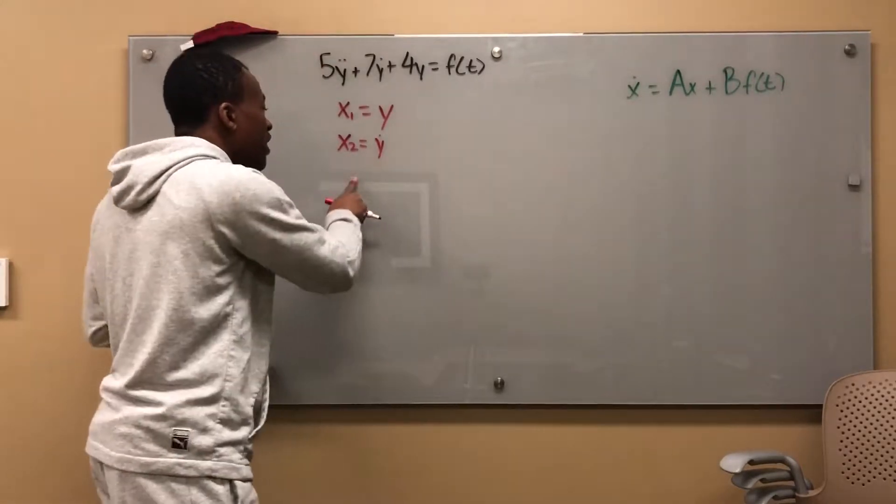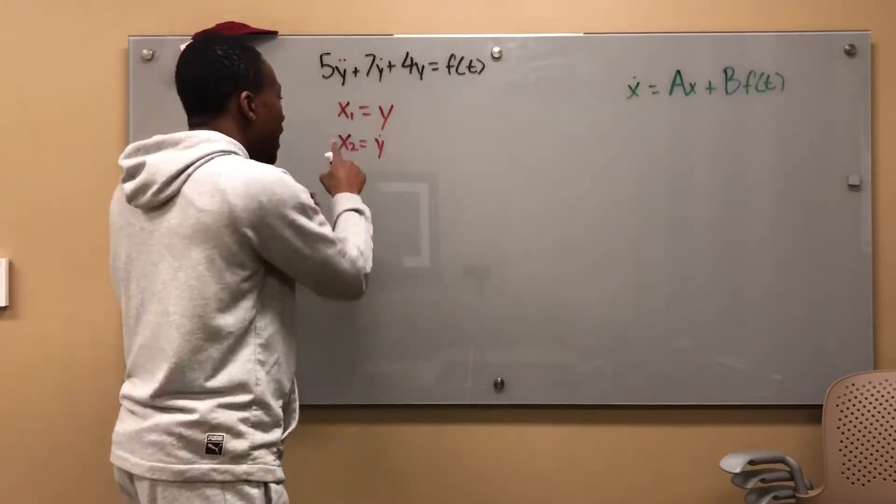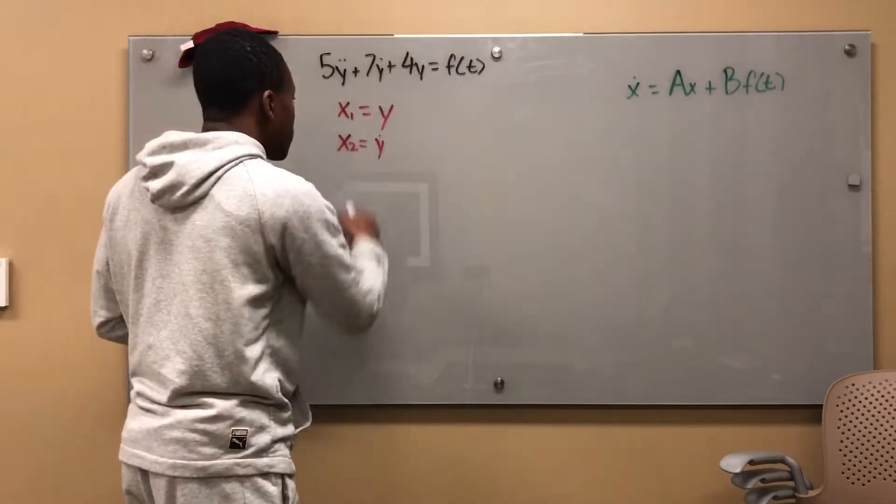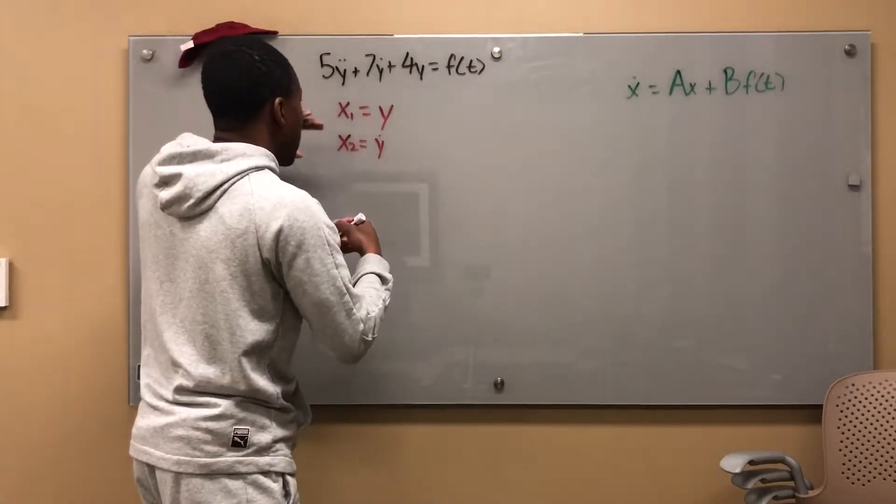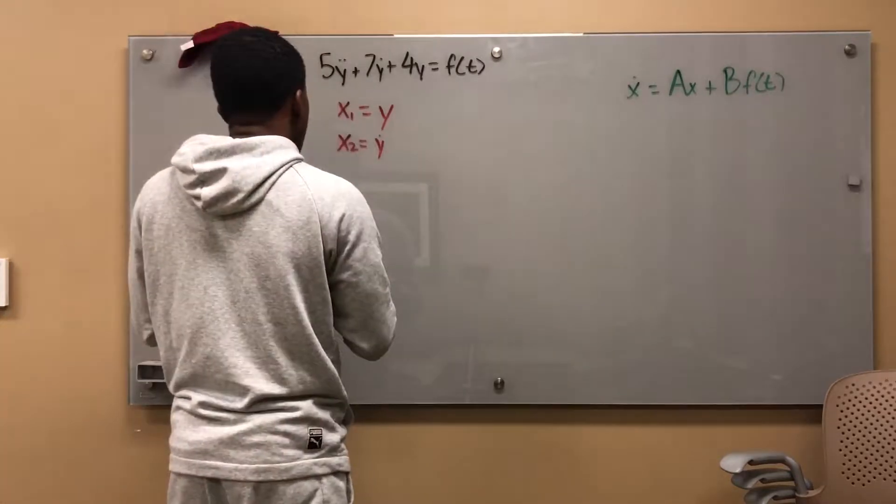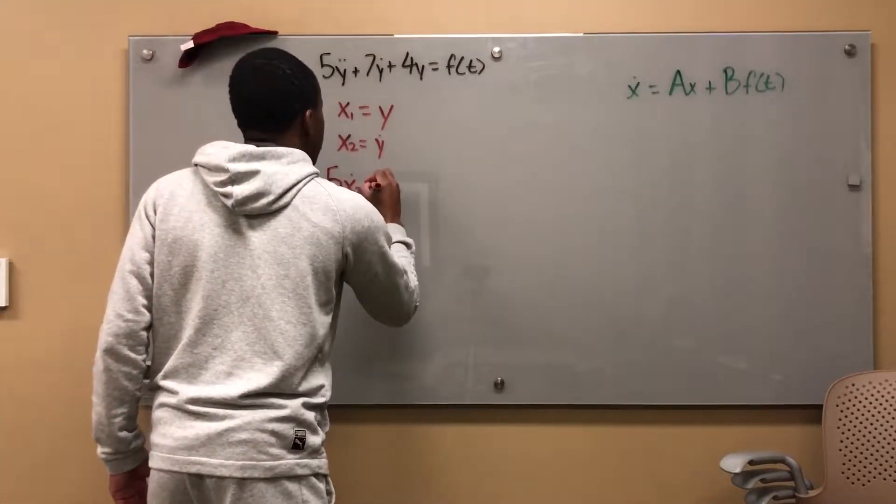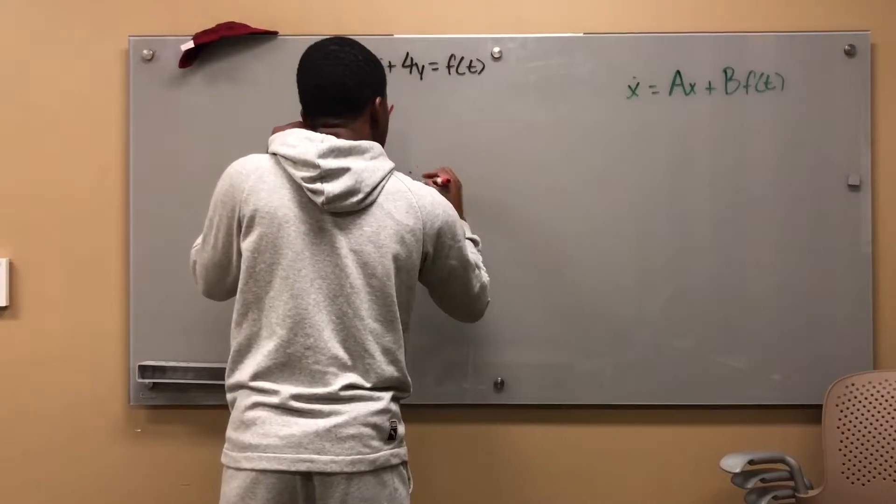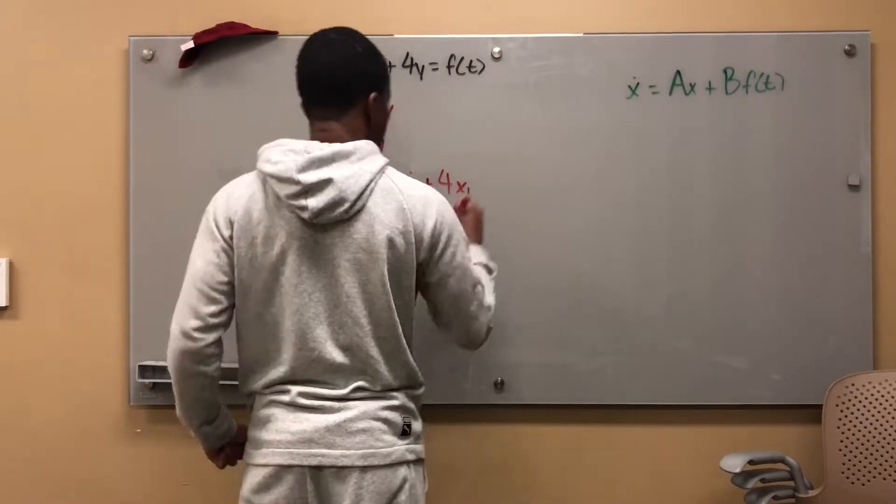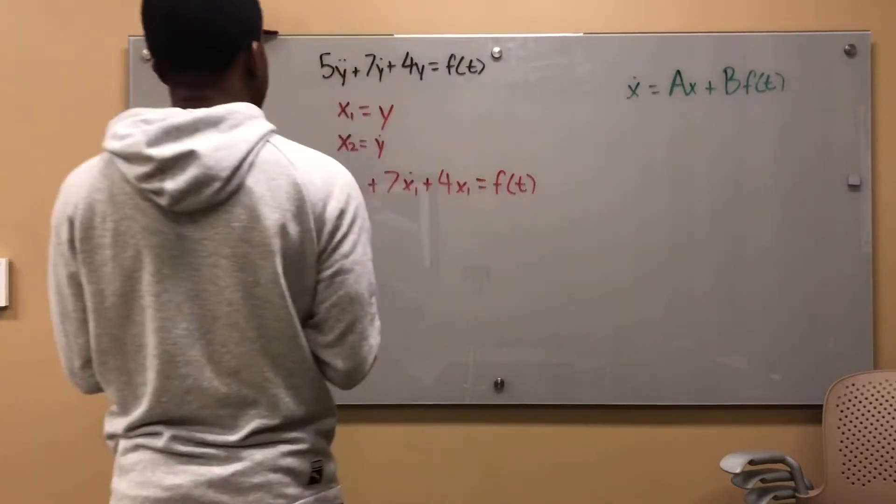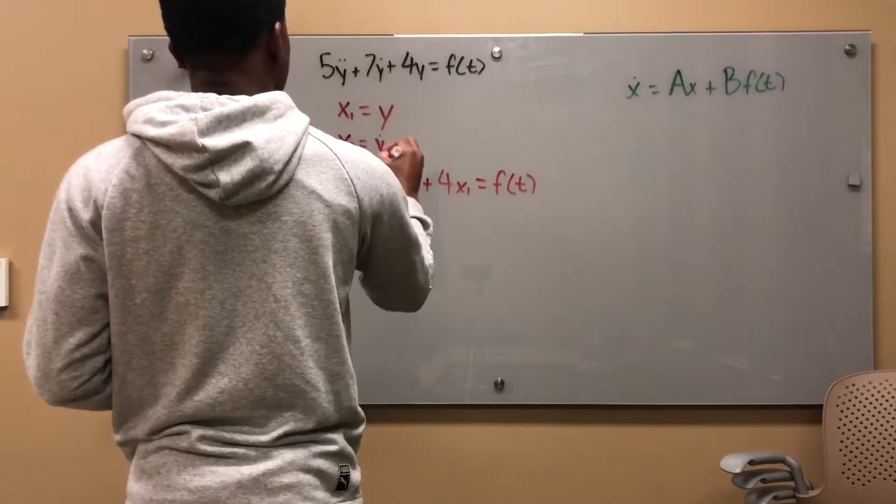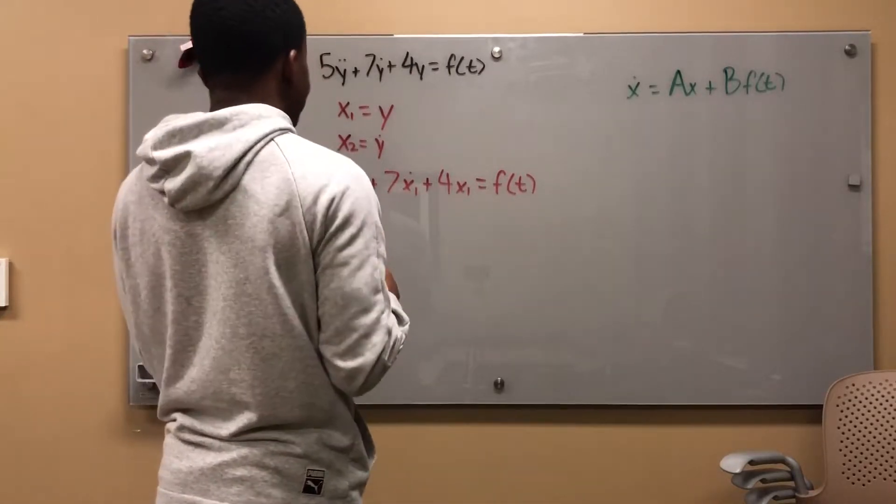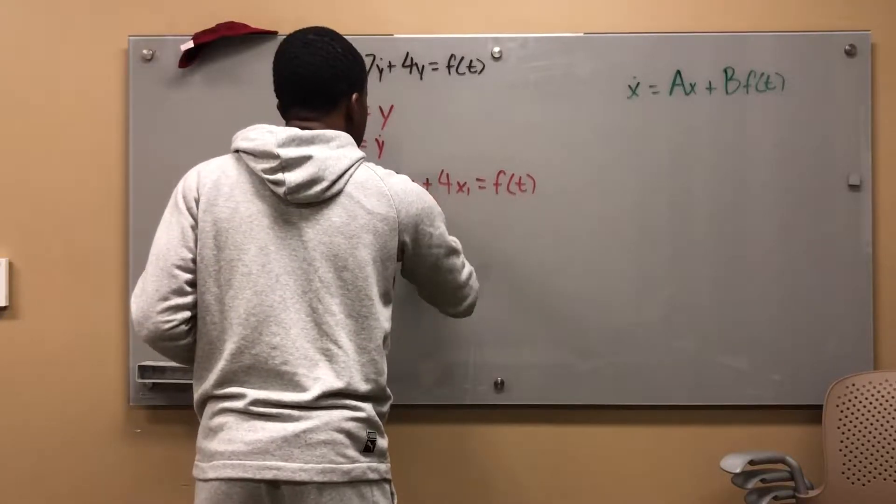The reason I'm stopping here and not saying that x_3 is y'' is because I can simply take the time derivative of x_2 and get y''. So I have everything that I need to be able to write this equation in terms of x_1 dot and x_2 dot. Let me rewrite this whole thing. So that would give me 5x_2 dot + 7x_1 dot + 4x_1 = f(t).